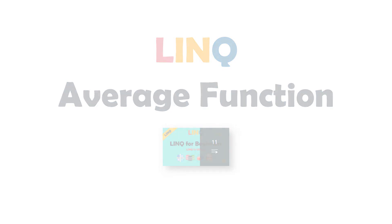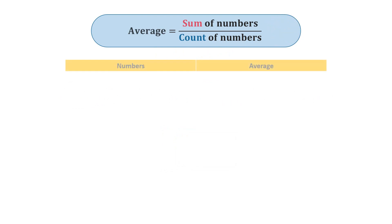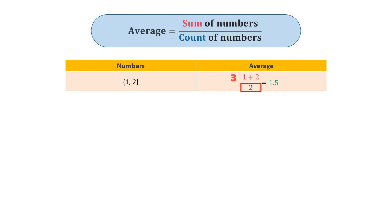The average function is calculated as follows. You sum the numbers together, then divide them by the count of numbers. For example, we have the following two numbers: 1 and 2. We sum 1 and 2 together — that makes 3. The count of numbers in this example is 2, so we divide 3 by 2. That gives the number 1.5, which is the average of those two numbers.